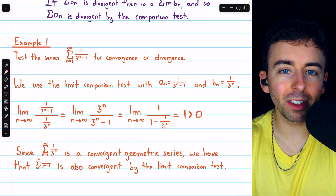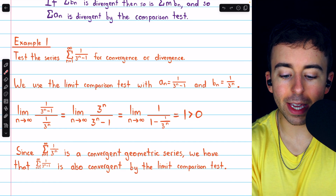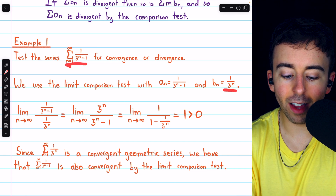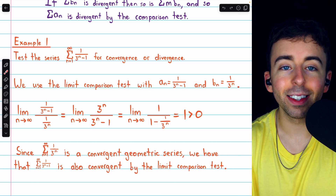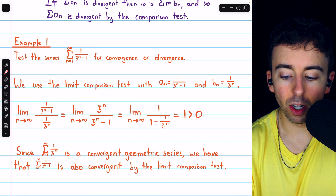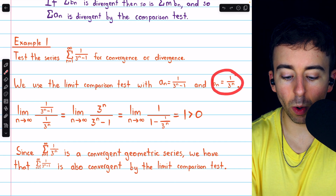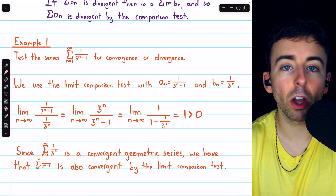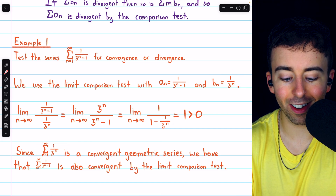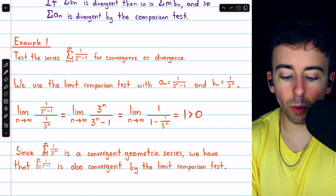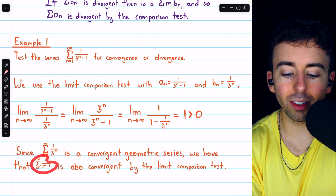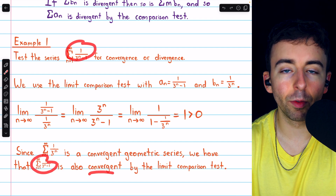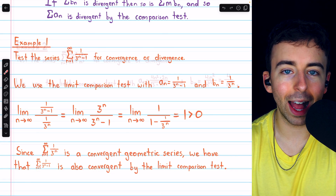So by the limit comparison test, the behavior of these two series must be the same. We know that 1 over 3 to the n is convergent — it's a geometric series with r equal to 1 third — and so indeed our series, as suspected, is convergent as well.